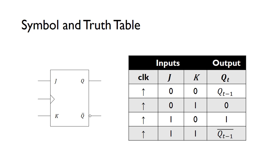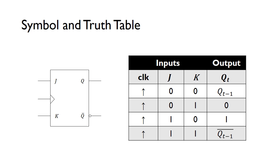The symbol of a J-K flip-flop is shown here. We've got our J and our K inputs, and we've also got our clock input. This is a positive edge triggered flip-flop — if it was negative edge triggered there would be a bubble on the input. We've also got our output Q, and then we have the not-Q output as well. The Q output and the not-Q output are always a complement of each other.